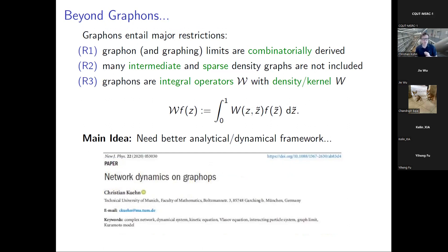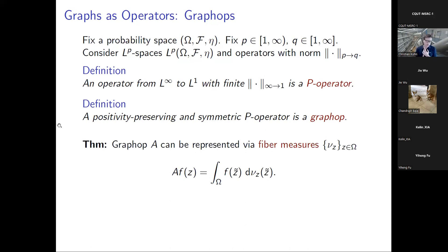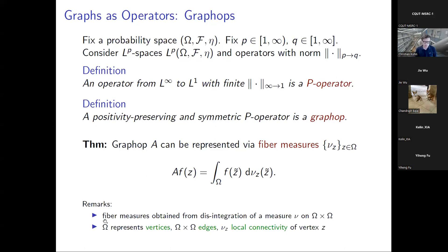How do graphops work? Fix a probability space — think of it as indexing your nodes on some manifold or probability space. Consider the associated L^p spaces. An operator from L^infinity to L^1 with finite norm is called a P-operator, and a positivity-preserving symmetric P-operator is a graphop. You can think of the adjacency matrix as an example. These operators are particularly useful for getting mean field limits.